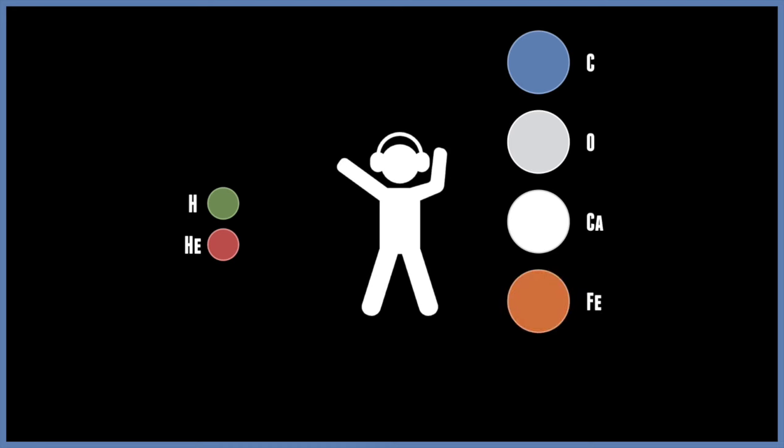You need more stuff, so you need things like carbon, oxygen, calcium, iron, and a host of other atoms to make a human being or life in general. So where did these heavier elements come from if they were not present at the start of the universe?